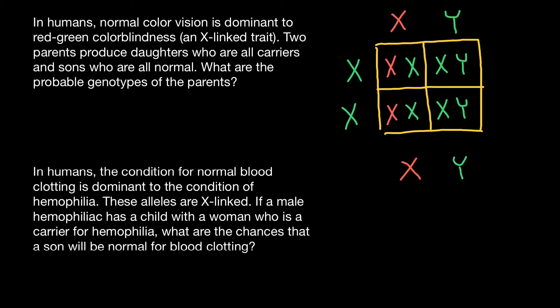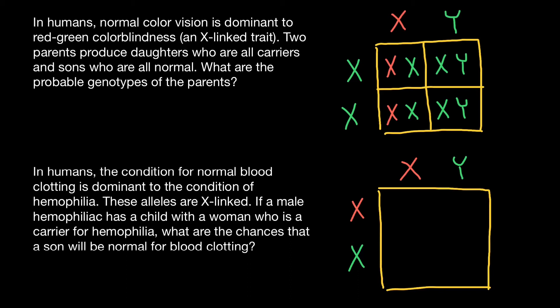This is the father's side. Let me re-read the problem: if a male hemophiliac has a child with a woman who is a carrier, the woman also has the defective allele on one of her chromosomes. So her genotype would be X(normal)X(defective). Now let's build a simple Punnett square and see what we can expect in this case.